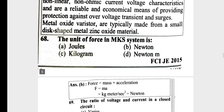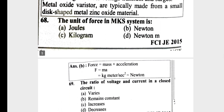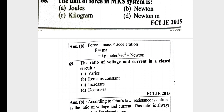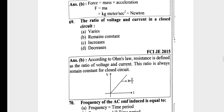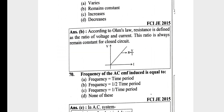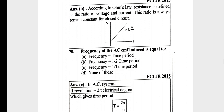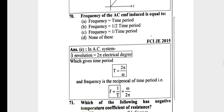The unit of force in the MKS system is N (Newton). The ratio of voltage and current in a closed circuit will remain constant. The frequency of AC — the EMF induced equals frequency. Frequency equals omega by 2 pi. One revolution equals 2 pi electrical degrees. Time period equals 2 pi by omega, and frequency is the reciprocal of the time period — that is, omega by 2 pi.